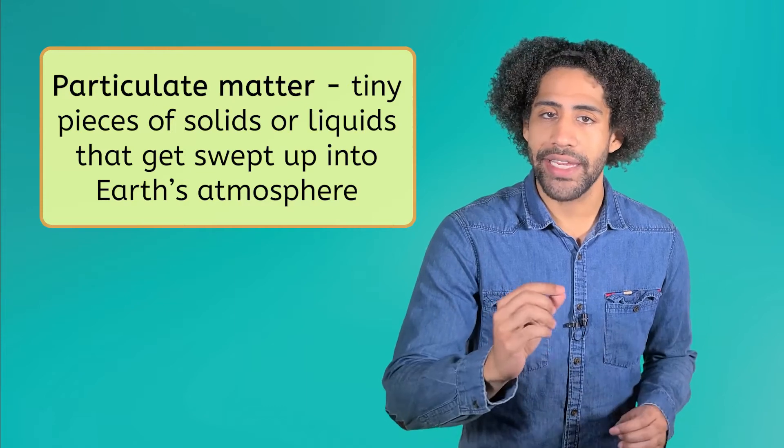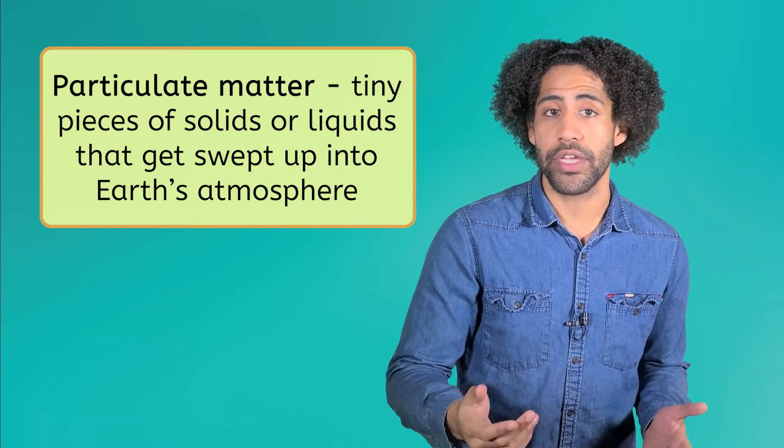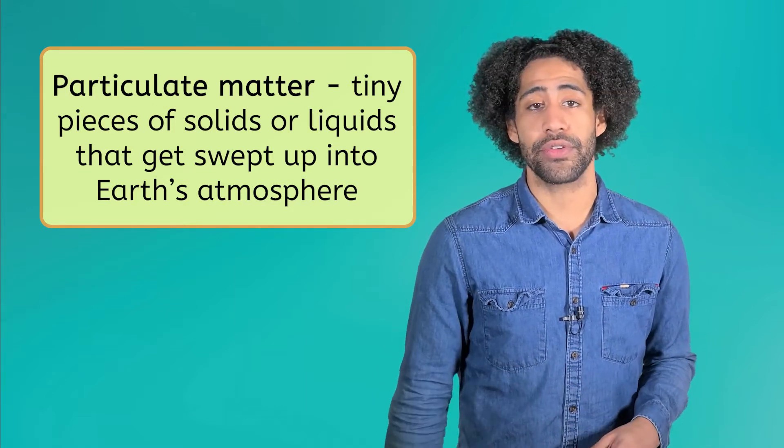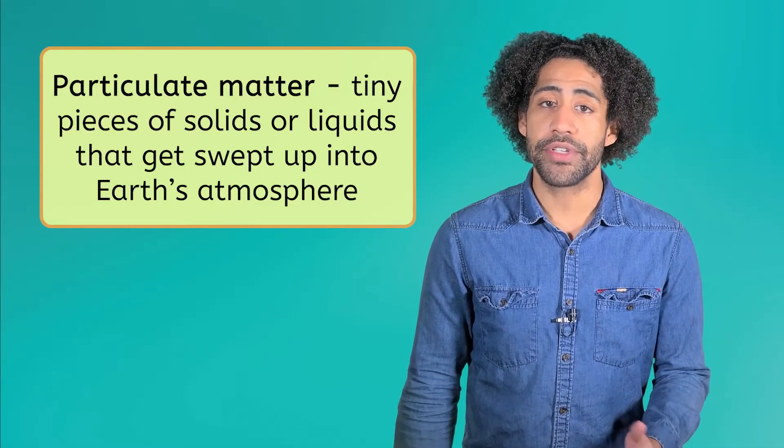Another common pollutant is particulate matter, which is just tiny little pieces of solids or liquids that get swept up into the Earth's atmosphere. You can think of particulate matter as dust made of things like chemicals or plastics. They often come from construction sites and factories. Pollutants like nitrogen dioxide and particulate matter are all harmful to the environment and aren't really found in nature in any significant amounts.